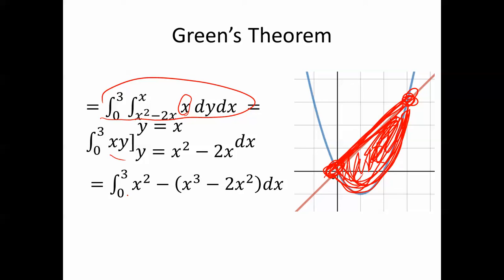So notice the x squared minus negative 2x squared, this can be 3x squared. So we get the integral of 3x squared minus x cubed, as x goes from 0 to 3.